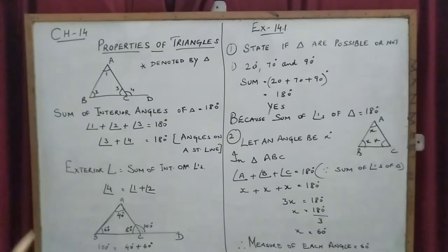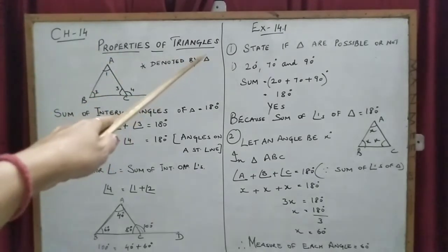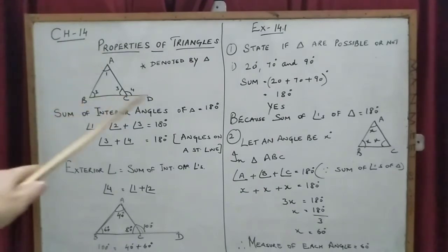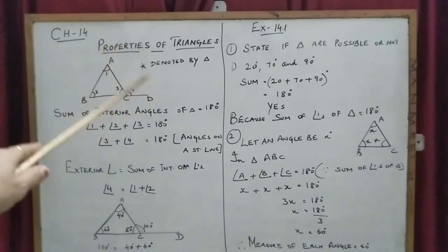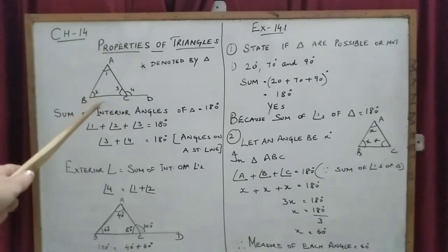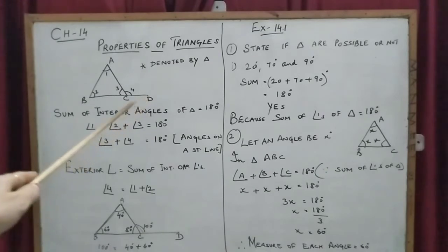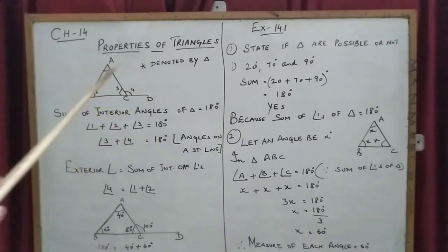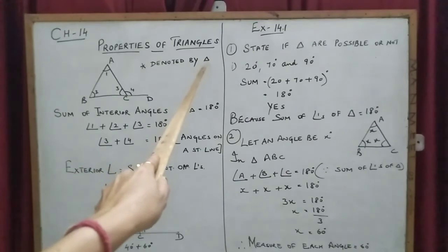Good morning students. Today we will do Chapter 14: Properties of Triangles. A triangle is a three-sided figure. I have made a triangle here with one exterior angle also, because that is part of the chapter. A triangle is denoted by this small triangle symbol.